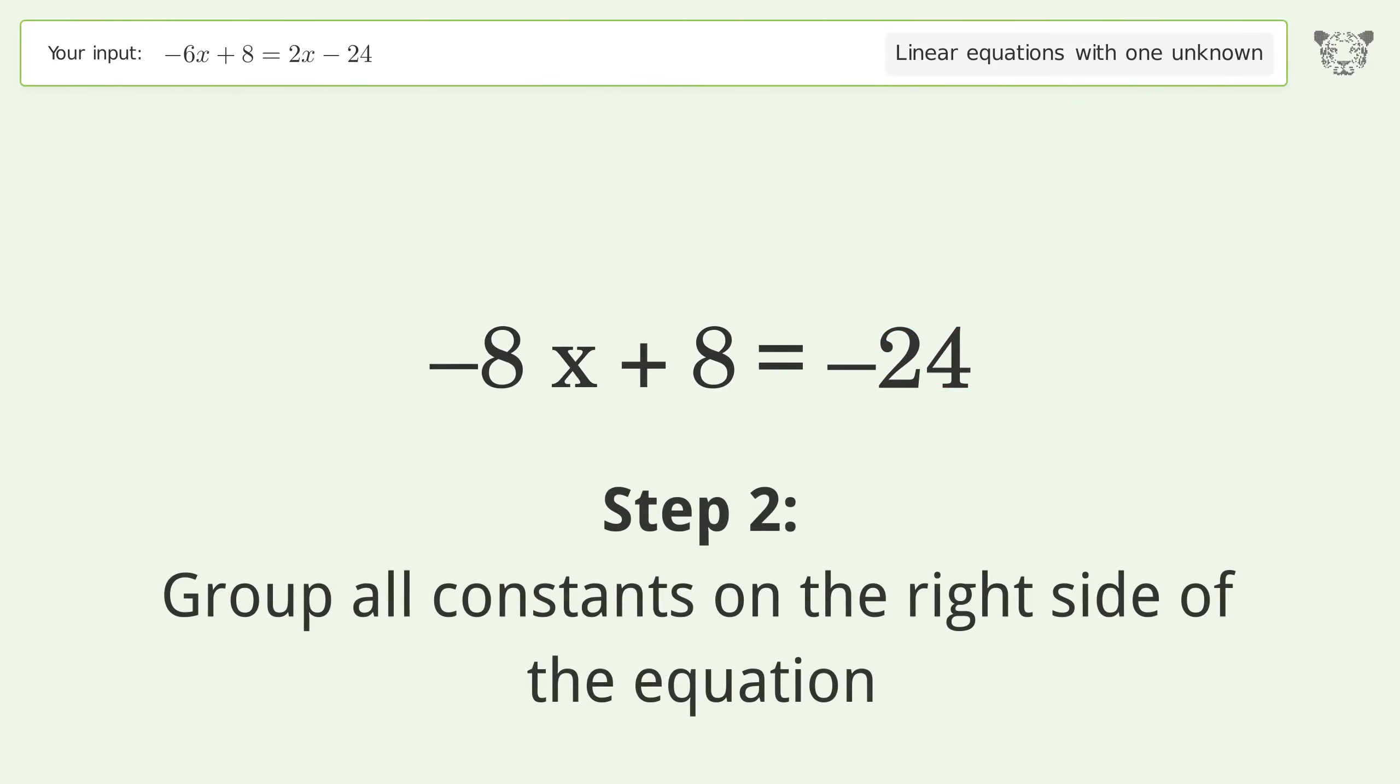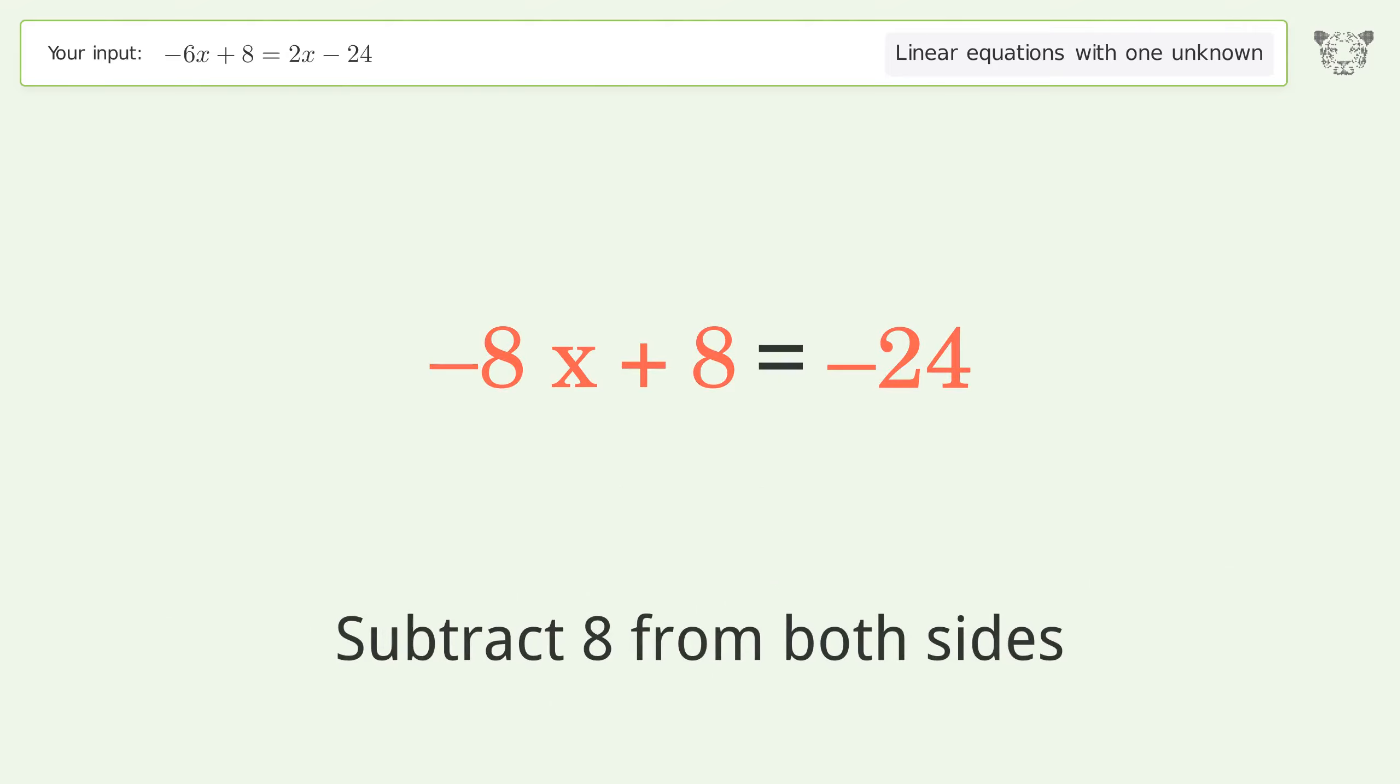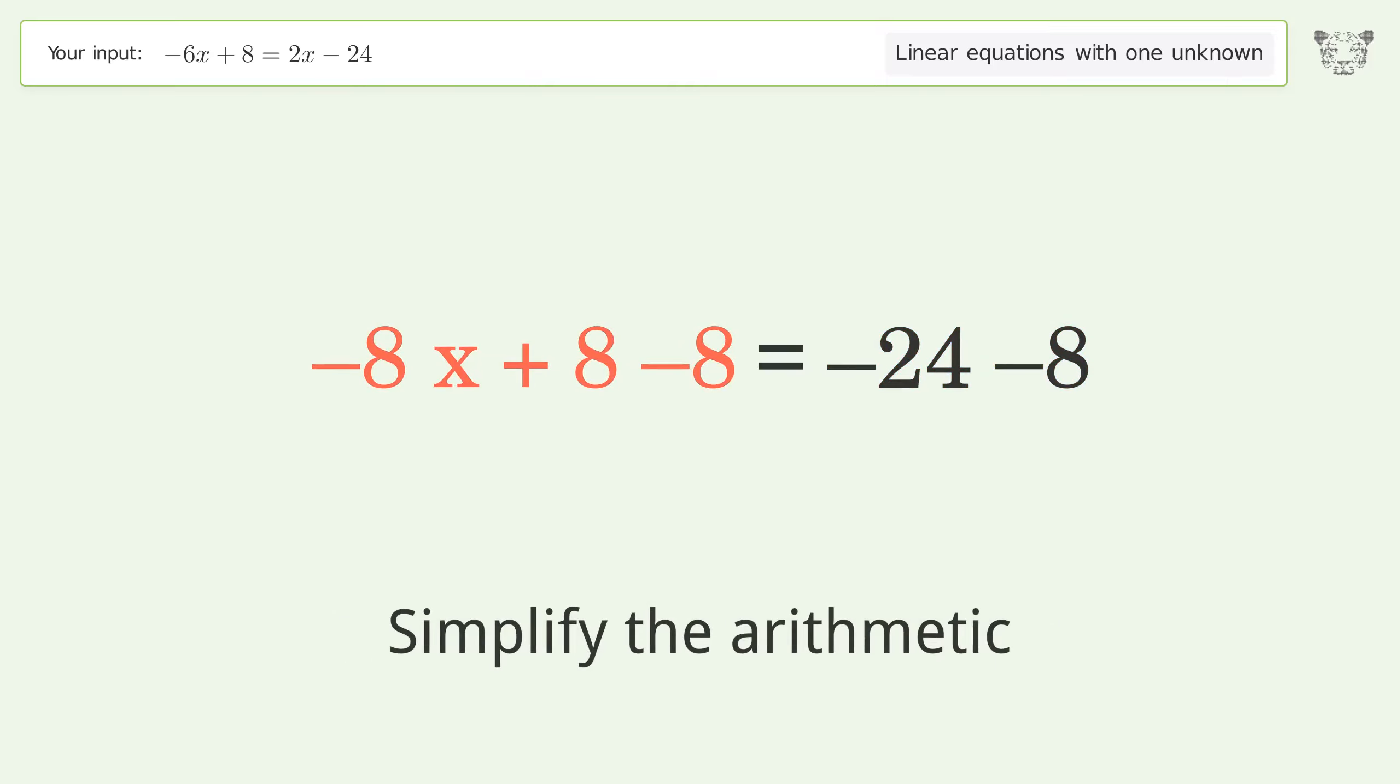Group all constants on the right side of the equation. Subtract 8 from both sides. Simplify the arithmetic.